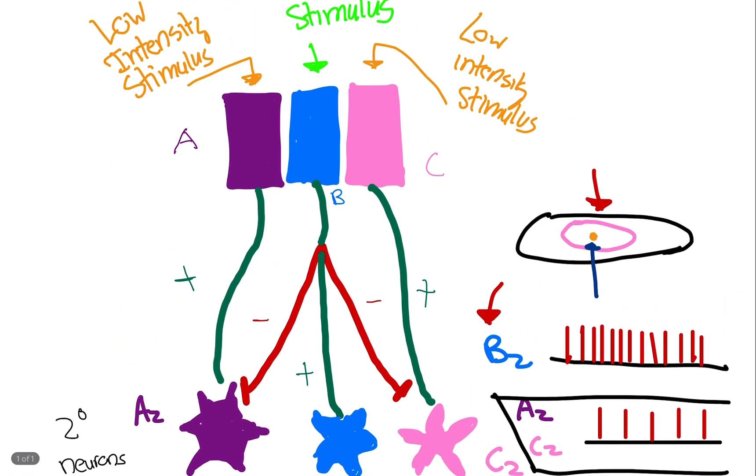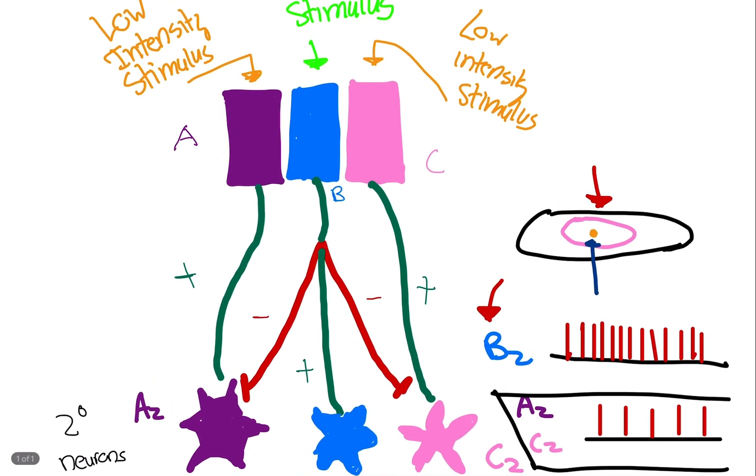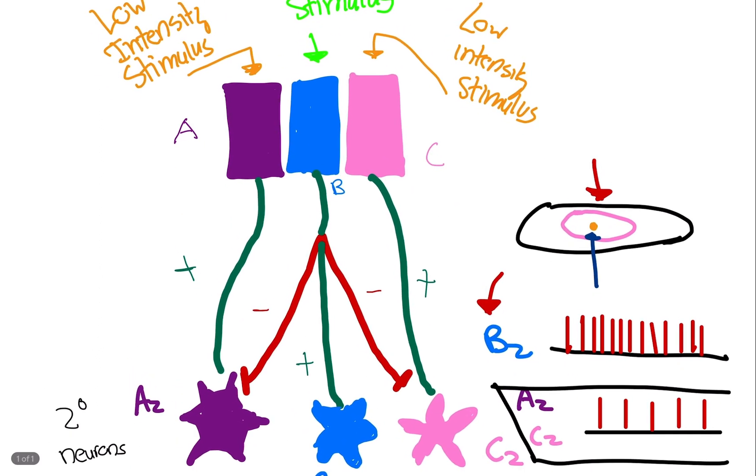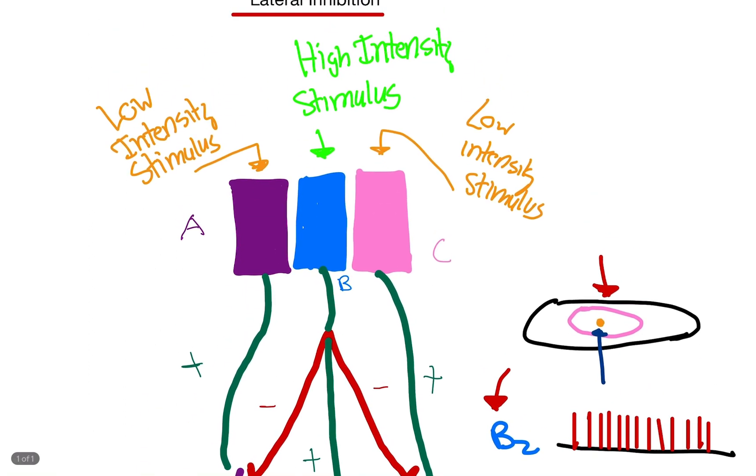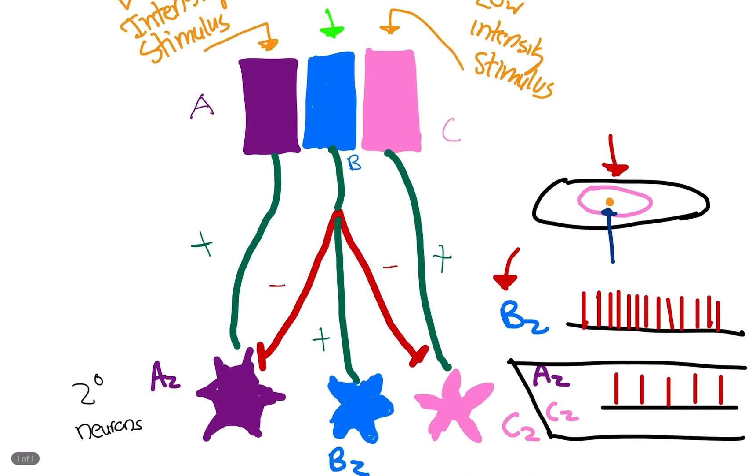What you need to know is the area that has the most stimulus is the one that's going to be doing the inhibiting. So A and C are not going to do any inhibition. It's the area where there's the highest stimulus. That's basically going to be telling the other neurons around it to shut up. Silence yourselves.